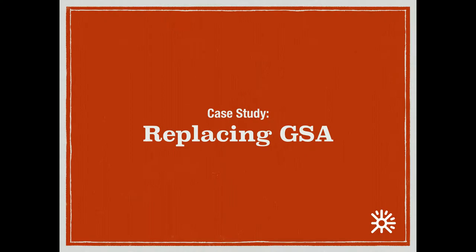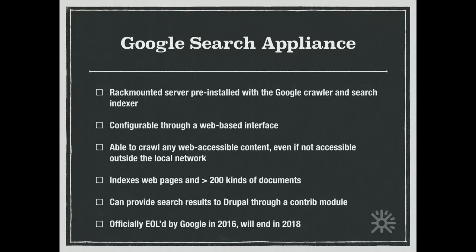What we're going to be talking about today is really a case study around a project where we were asked to replace the Google Search Appliance. The Google Search Appliance is a big yellow box that you drop into your server environment with the Google algorithm pre-installed. If you ever try to tamper with it, apparently loud alarms go off. It's intended as a way to use Google's search expertise for your local data, including intranet content.